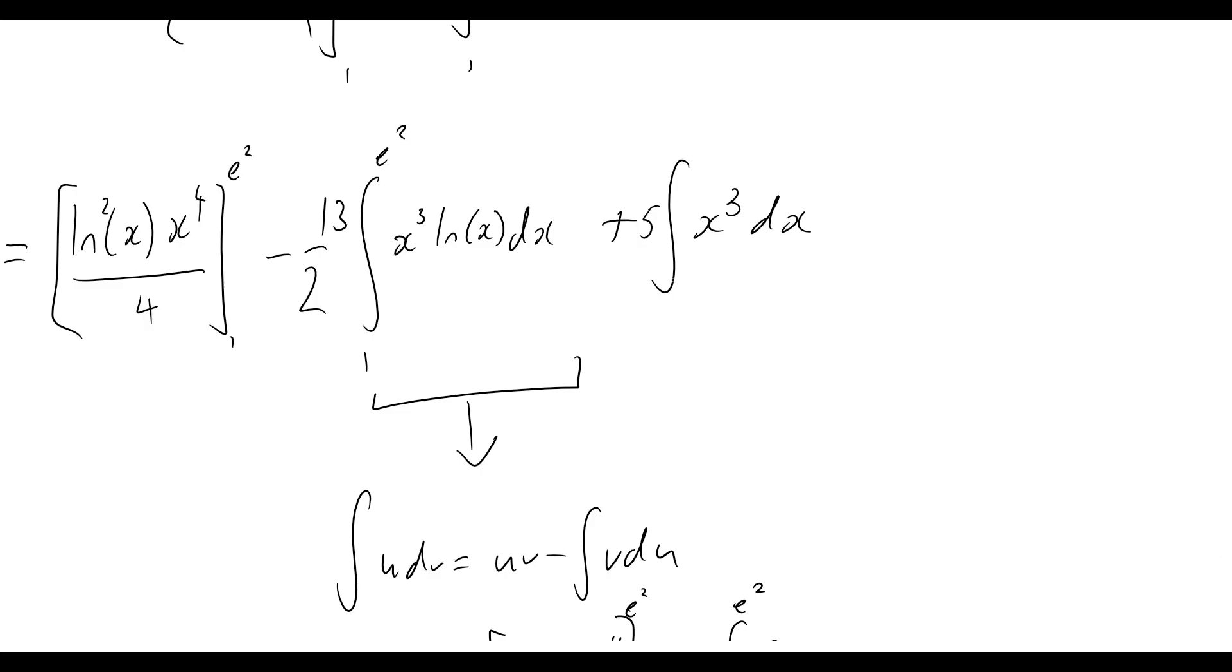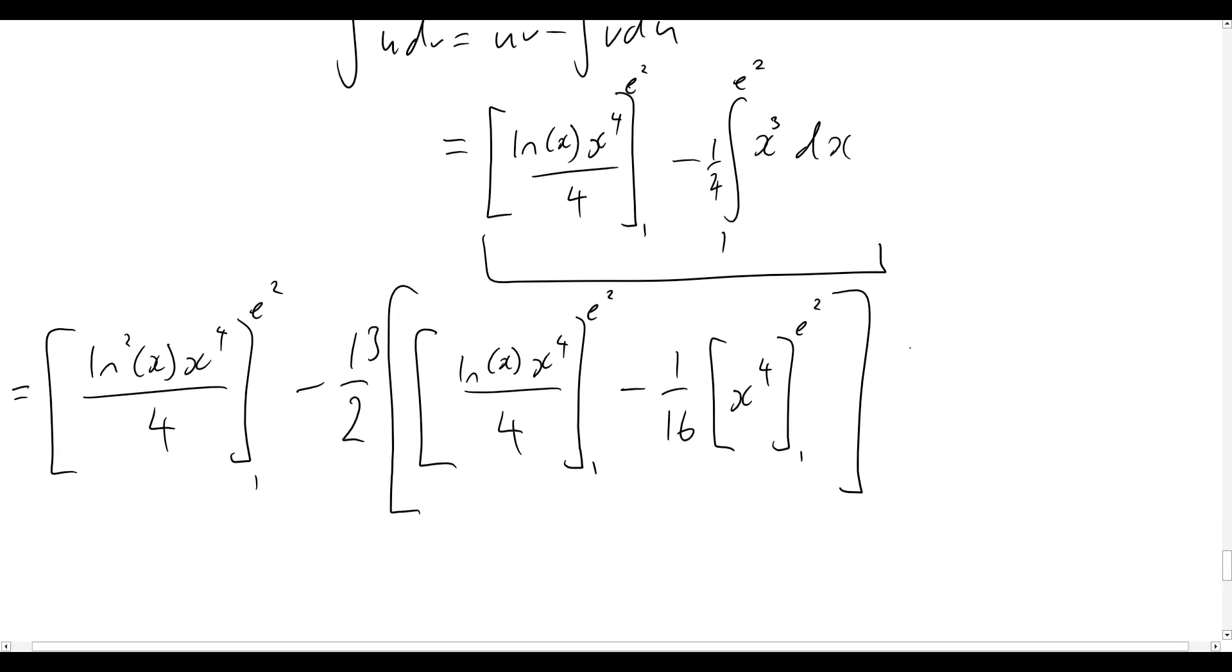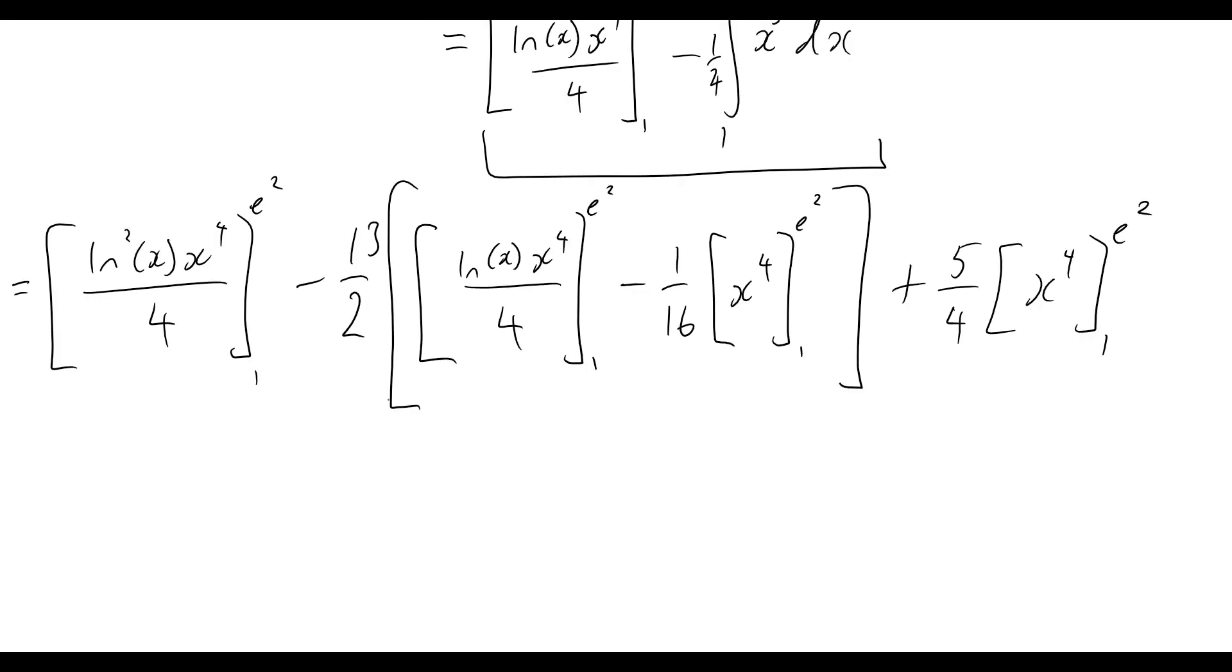And then lastly, we'll have that plus 5 times the integral of x cubed. So again, we can integrate that and bring that factor of a 1 quarter out the front. So that'll just now become 1 on 4 times by x to the 4 evaluated from 1 to e squared. And there we are.